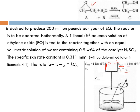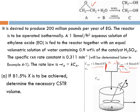The specific reaction rate constant is 0.311 (to be calculated). The rate law is: −r_A = k·C_A. There is no C_B term because water is provided in excess — it comes through both streams — so the water concentration does not change significantly as the reaction progresses, even though water is consumed. The required conversion to be achieved is 81.5%, and we need to determine the necessary CSTR volume.